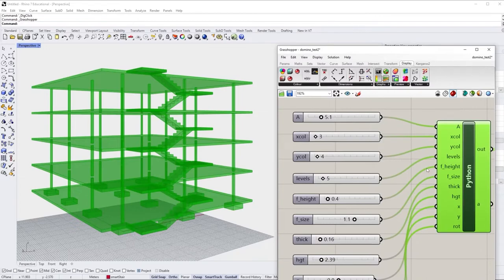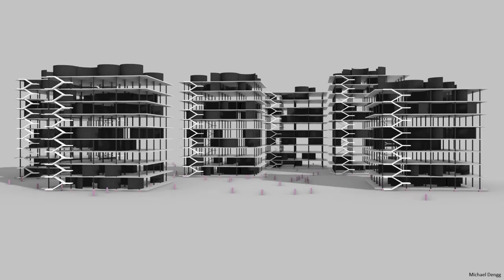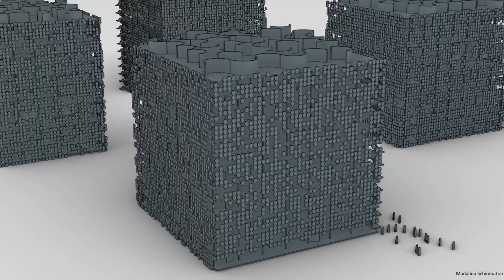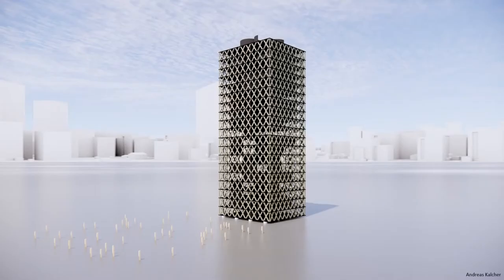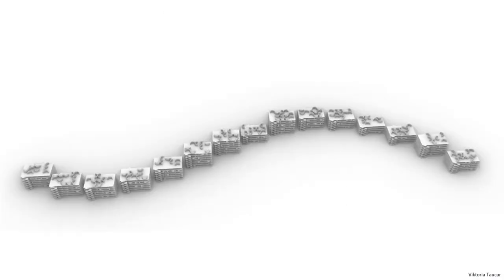With the parametric tools that we've looked at so far, we can easily create a little city of domino buildings, all with different parameters. Here are some student projects that do just that. So far, so boring. We can see how this kind of generative methods could be used to create entire cities of bland buildings that all look more or less the same, because they were generated with the same parametric model.